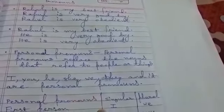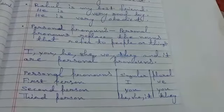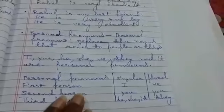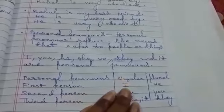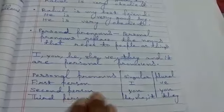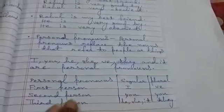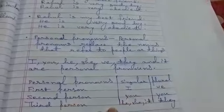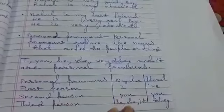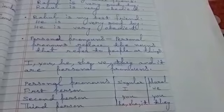These are the personal pronouns that we generally use. In English we have three persons: first, second, and third person. For first person singular number we use 'I', and for plural number we use 'we'. For second person, both singular and plural number, we use 'you'. For third person singular number we use 'he', 'she', and 'it', and for plural number we use 'they'.